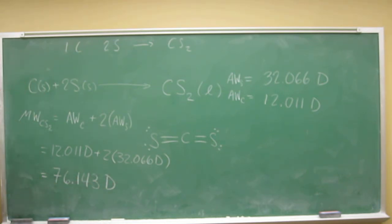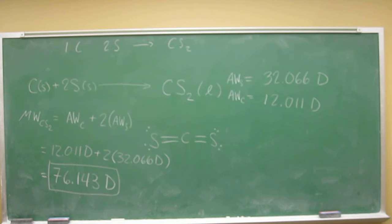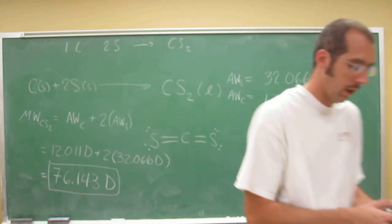Okay, remember that. And do we do the right number of sig figs? Yeah. Okay, so three, three after the decimal point, so three. So that's how much one molecule of carbon disulfide weighs. So that's how you do molecular weight.